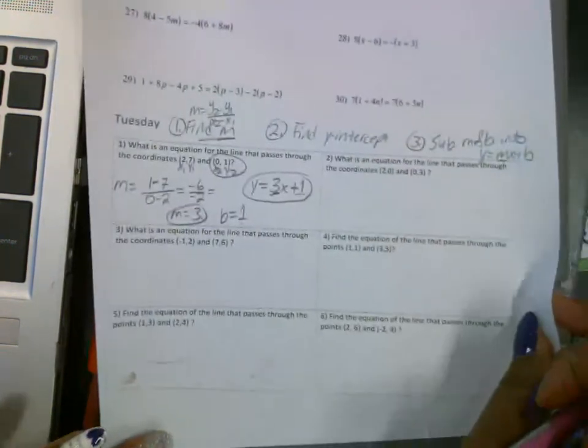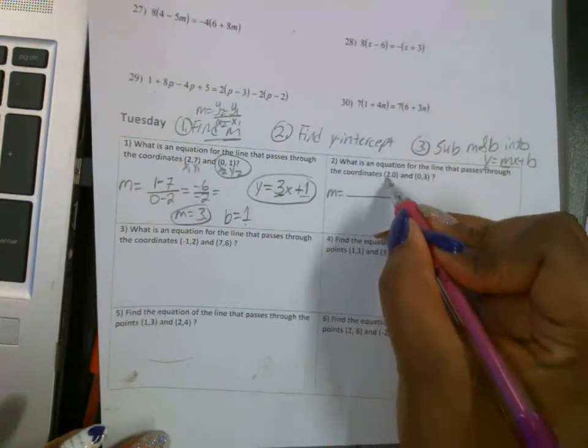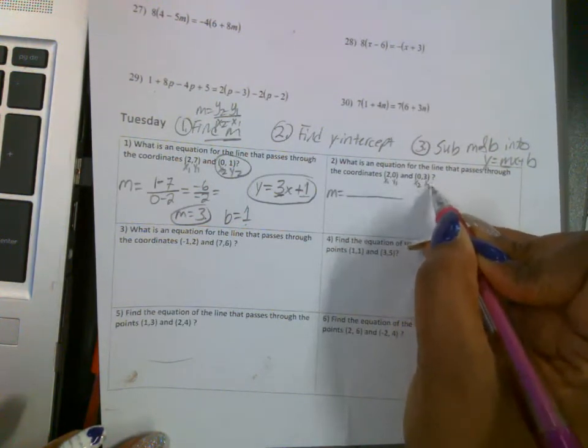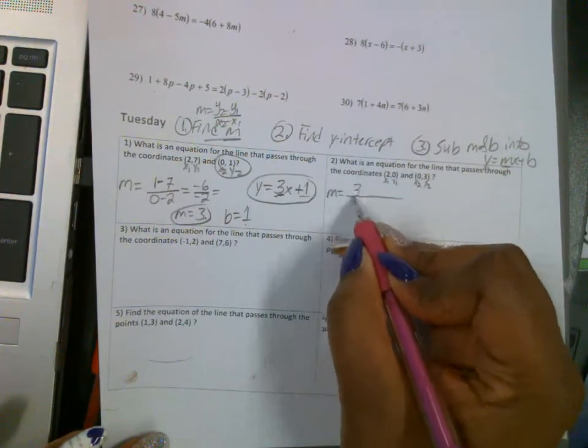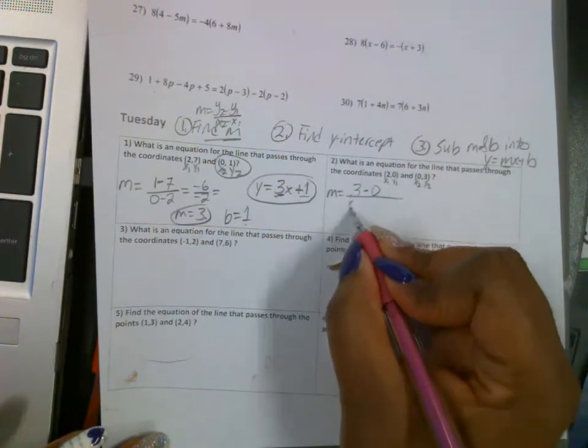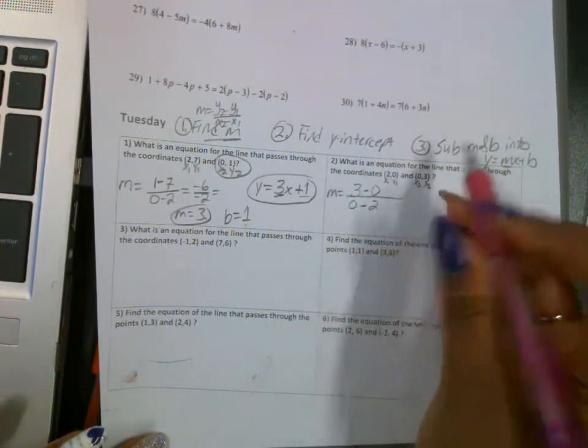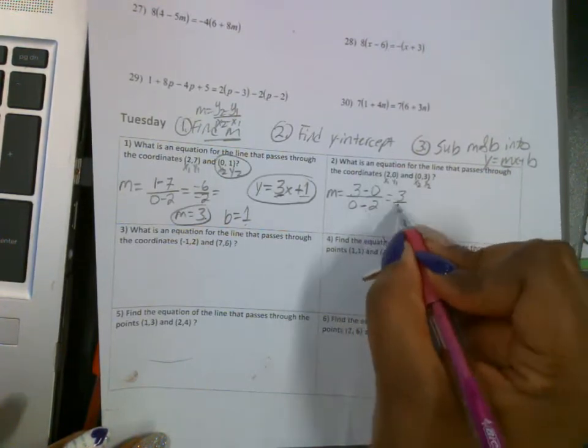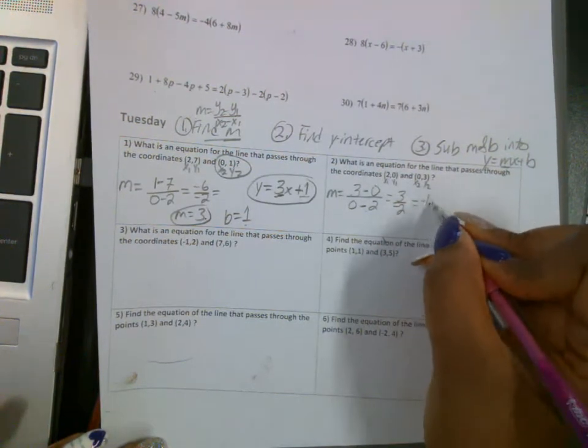Let's look at number 2. We're finding the slope again. Label x1, y1 for the first point. x2, y2 is the second point. So we put y2 on top: this is 3 minus y1, which is 0. x2 is 0, minus x1, which is 2. So this gives me 3 on top and negative 2 on the bottom. So this is negative 1.5 or negative 3 over 2.